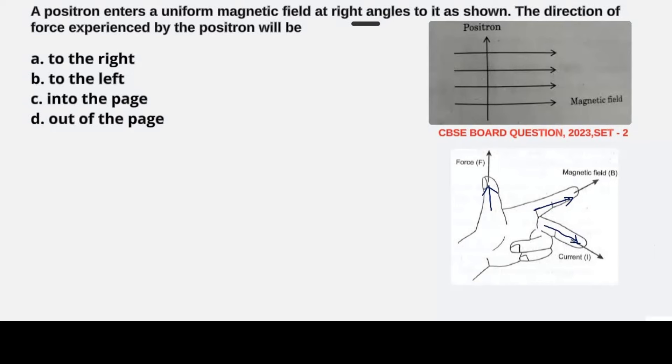Here is an important thing to remember which most students mistake: when we talk of current here, there are two types of current. One is conventional current and another is electronic current. Conventional current is due to the flow of positive charges and electronic current is due to the flow of negative charges, that is electrons.